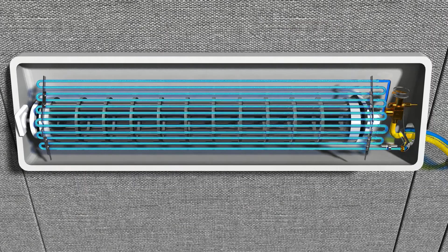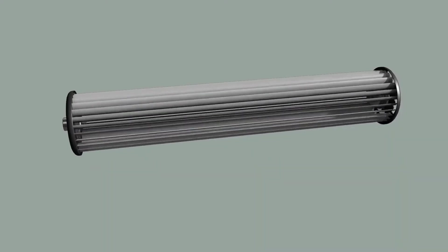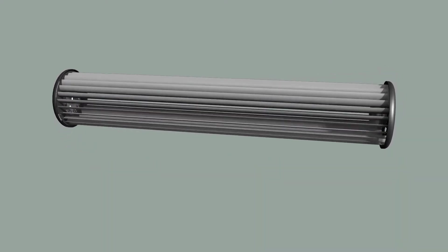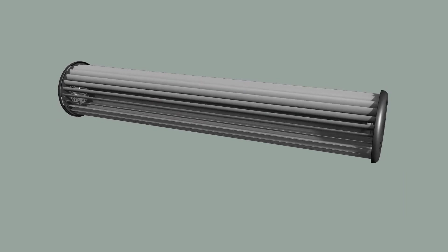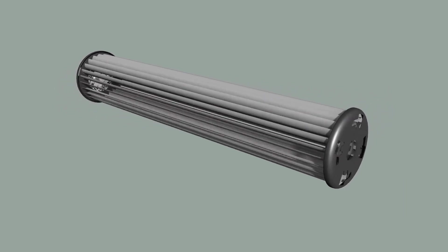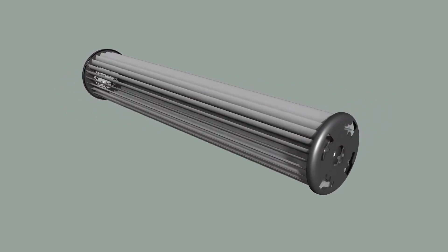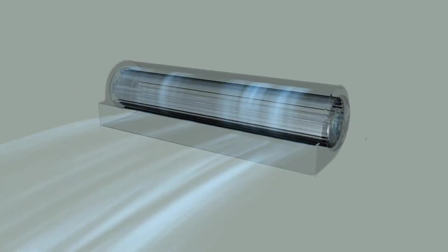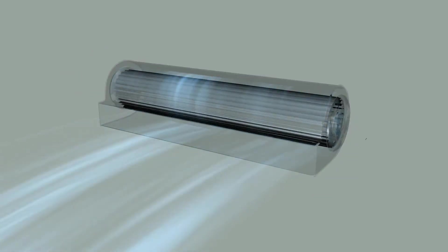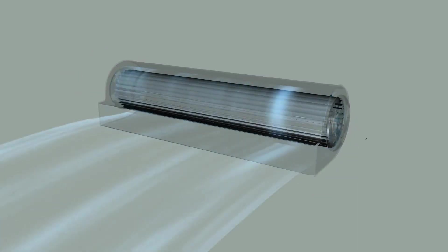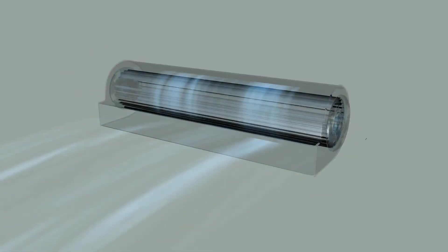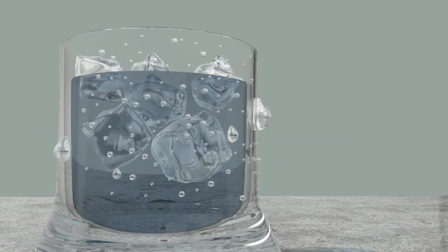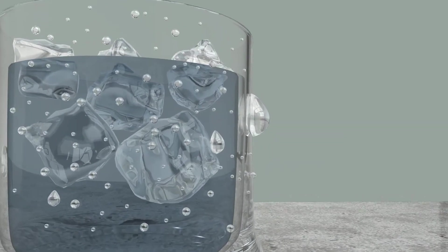Fans used in the indoor unit of an air conditioner are shaped as a cylinder rather than the more familiar propeller. This type of fan is called an impeller. As wall-mounted air conditioners cannot take up large space, the impeller type fan is used instead of the propeller type.